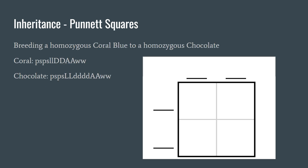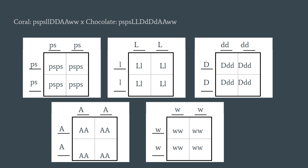An important part of understanding color genetic inheritance is understanding how to use Punnett squares. We will do an example of breeding a homozygous coral blue to a homozygous chocolate. Shown on the screen is the genotype of those two colors. In the bottom right you see an empty Punnett square. It doesn't matter if you put the cock or the hen on the top or the side, but you will take the two alleles and place the hens on top and the cocks on the side, or vice versa. You will have a separate square for each locus. You will then look at the results on the next slide to see what the resulting genotypes of the offspring will be. Pause if you want to review.